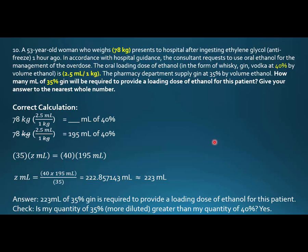The oral loading dose of ethanol in the form of whiskey, gin, and vodka at 40% is 2.5 milliliters per kg. Pharmacy department supplies gin at 35% by volume of ethanol. How many mLs of 35% gin will be required to provide a loading dose of ethanol for this patient? Give your answer to the nearest whole number.